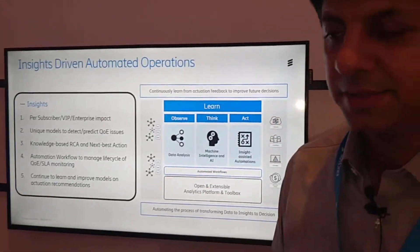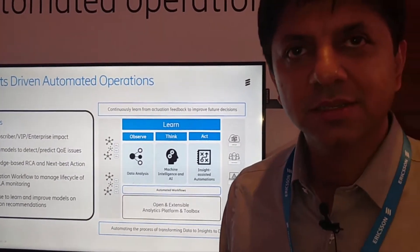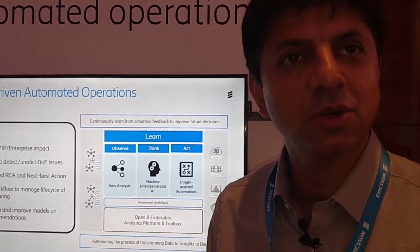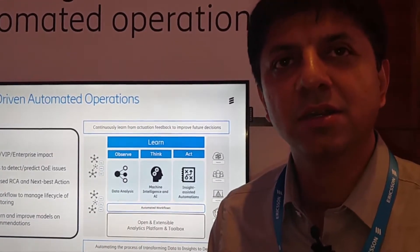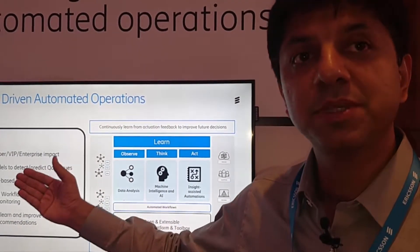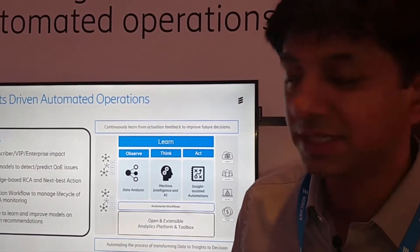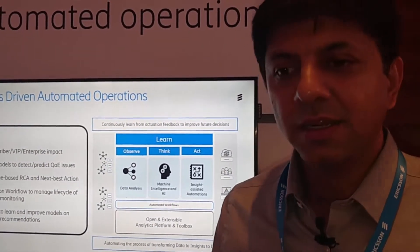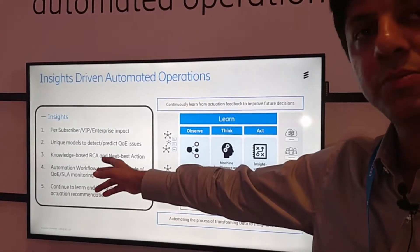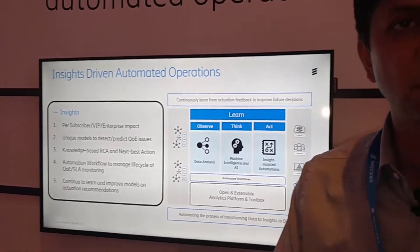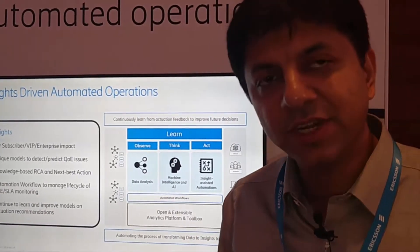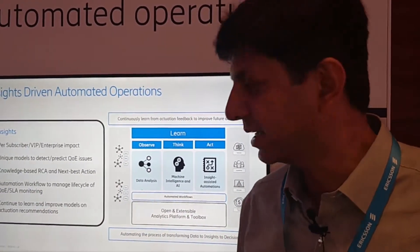Secondly, the unique models which basically capture a company's know-how and its experience from global operations are being embedded and enriched in the platform itself, which predicts quality of experience issues and gives actionable insights. Within that, a knowledge base is being built using neural networks with root cause automation and next best actions — a knowledge base built into this platform which provides all the different intelligence for root cause analysis and resolutions.